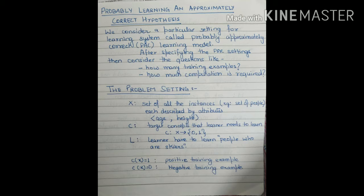What is this PAC learning model? Basically we have to provide some learning settings to our learner, which we call the probably approximately correct learning model. As mentioned in the notes, we consider a particular setting for the learning system, which we call the PAC learning model. After specifying the PAC settings, we have to focus on questions like how many training examples are enough for a learner and how much computation is required.